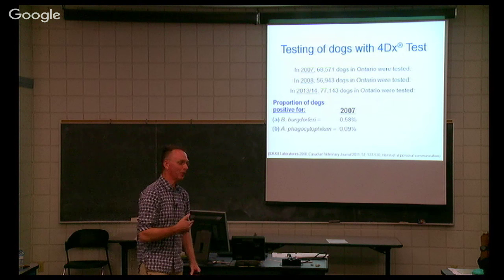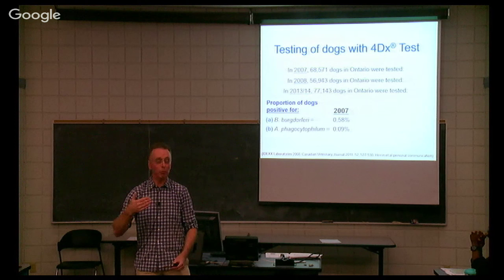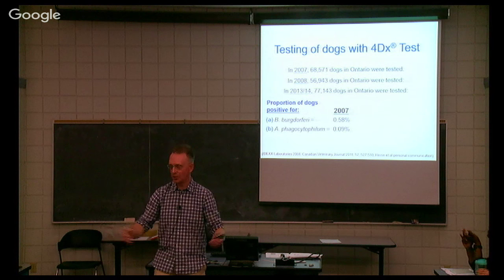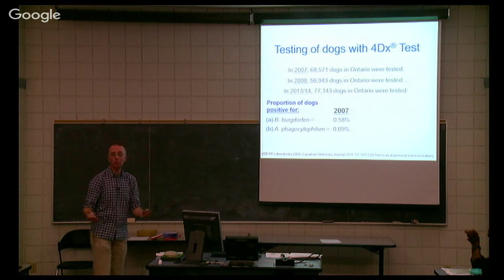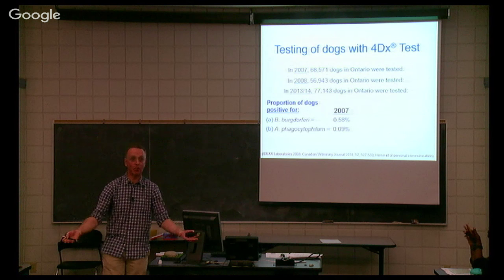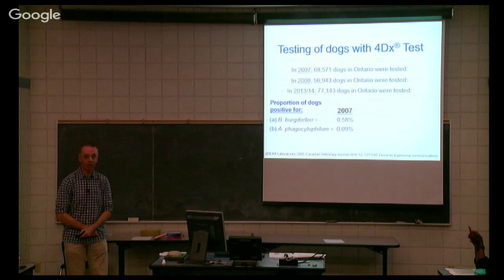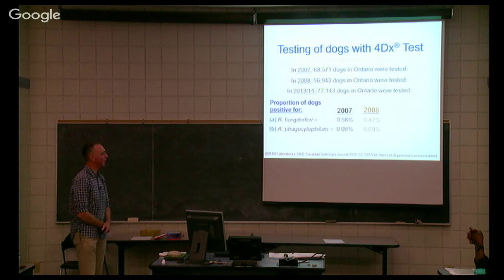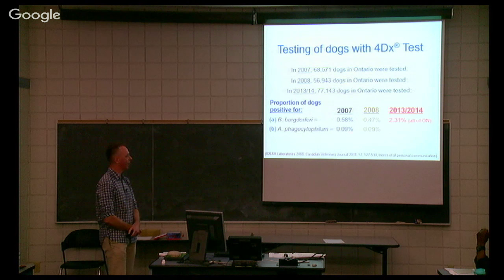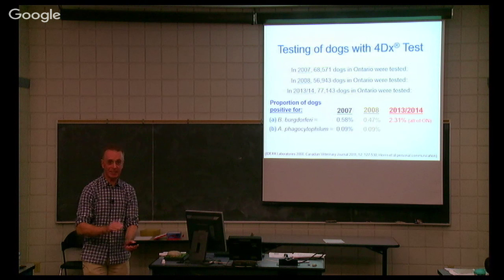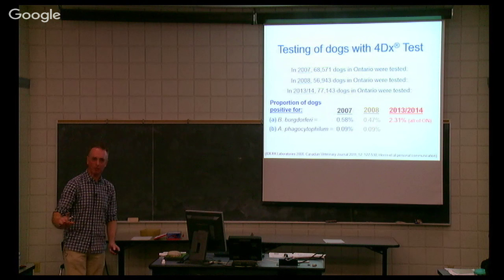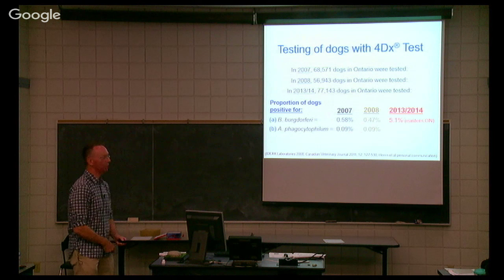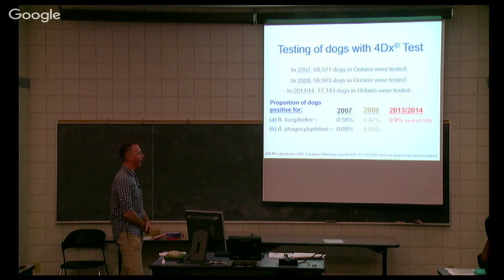For comparison, places like Connecticut have 40, 50, 60% or higher seropositive dogs — more than half of all dogs seropositive, though most dogs never become clinical. In 2008, Ontario numbers hadn't changed much. But for 2013-2014, 2.31% of all dogs tested in Ontario are now positive. In the area considered high-risk — eastern Ontario — it's up to 5.1%. Excluding the high-risk area, it's 0.9%. All the evidence suggests exposure is changing significantly in dogs, and wherever there's significantly elevated seroprevalence in dogs, you have to assume people in the same areas are also getting exposed.